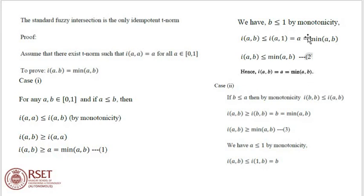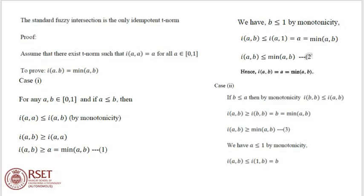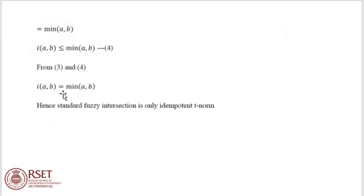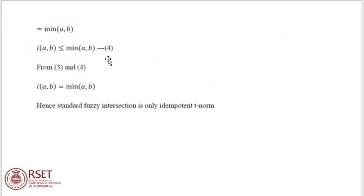So I(A,B) = A, which is minimum of A and B. Similarly, case 2: I(A,B) = B, which is also minimum of A and B. Therefore I(A,B) is less than or equal to minimum of A and B. Combining equation 1, which states I(A,B) is greater than or equal to minimum of A and B, and equation 2, which states I(A,B) is less than or equal to minimum of A and B, we can conclude that I(A,B) equals minimum of A and B, and thus the standard fuzzy intersection is the only idempotent T-norm.